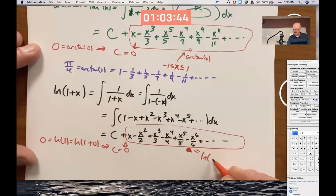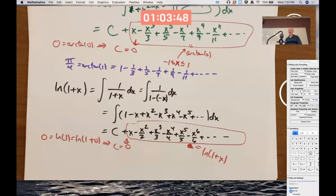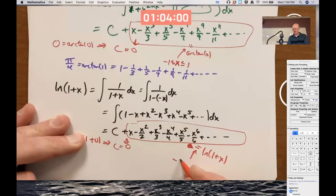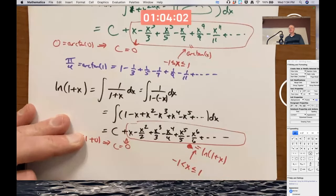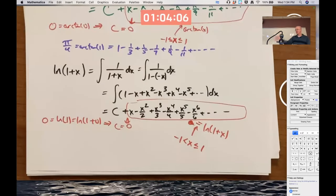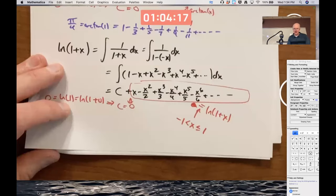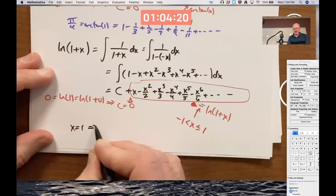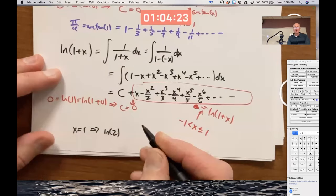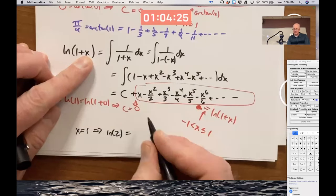And that, it turns out, happens to be true not in an open interval, not in a closed interval, but a half open, half closed interval. You include, it turns out, the right endpoint but not the left endpoint. I mean, it makes sense to not include the left endpoint, negative 1, because there's where the vertical asymptote is for natural log of 1 plus x. But the right endpoint, it works as well because you could use the alternating series test. And if you do substitute in x equals 1, what you get is natural log of 2. 1 plus 1 is 2 equals this series when you plug in 1. 1 minus a half plus a third minus a fourth. Our old friend, the alternating harmonic series.